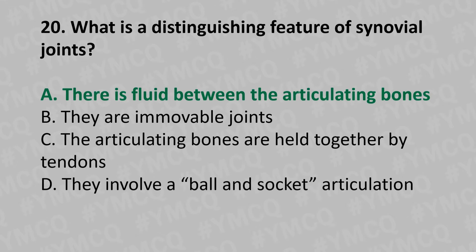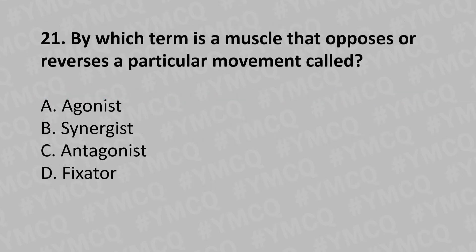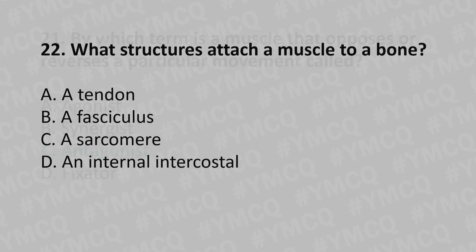Moving to our 21st question: By which term is the muscle that opposes or reverses a particular movement called? Option A: agonist, Option B: synergist, Option C: antagonist, Option D: fixator. The answer is Option C: antagonist.